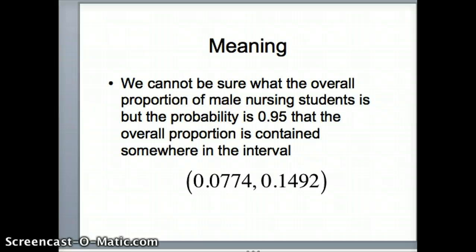Now what does that mean? We cannot be sure what the overall proportion of male nursing students is, but the probability is 0.95 that the overall proportion is contained somewhere in that interval. We don't know what the overall proportion is, but we're pretty sure it's somewhere between 0.0774 and 0.1492. If we had all the nursing students in the country, we would expect, with a probability of 95%, that this interval would capture the overall proportion. Let's look at another example.